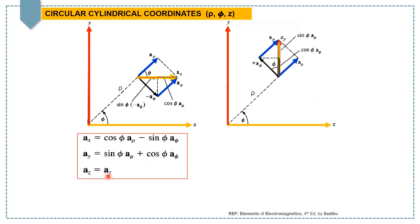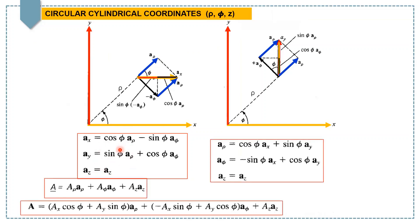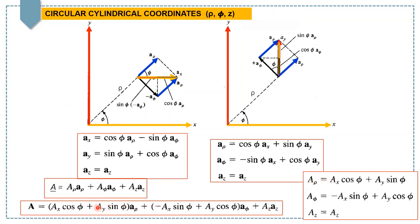We can also write these equations in terms of a-rho, a-phi, and az, since we need to substitute the unit vector equations into our vector A expression — which has a-rho, a-phi, and az components. By substituting a-rho and a-phi into the vector equation, vector A can be expressed accordingly. We can also write the inverse form where a-rho, a-phi, and az are expressed in terms of ax, ay, and az.